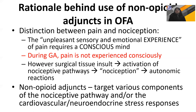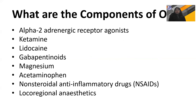Let us look at the rationale behind non-opioid adjuncts in Opioid-Free Anesthesia. There is a distinction between pain and nociception. Pain is an unpleasant sensory and emotional experience that requires a conscious mind. During general anesthesia, pain is not experienced consciously, but surgical insult leads to activation of the nociceptive pathway, resulting in nociception and associated autonomic reactions. Non-opioid adjuncts target various components of the nociceptive pathway and the cardiovascular and neuroendocrine response to stress.